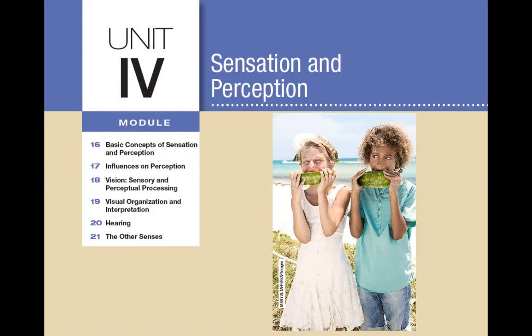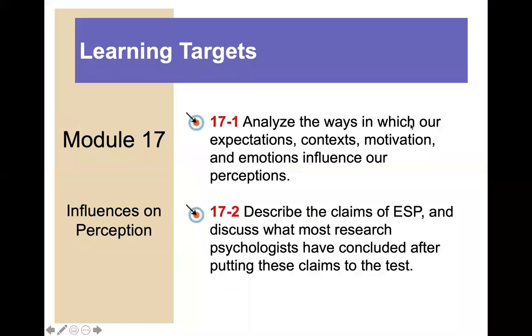What this module is about is really thinking about how our expectations, context, motivation, and emotions influence our perception. There are two learning targets for this module. One, analyze the ways in which our expectations, context, motivation, and emotions influence our perceptions. And two, describe the claims of ESP — extrasensory perception — and discuss what most research psychologists have concluded after putting these claims to the test.